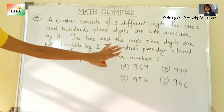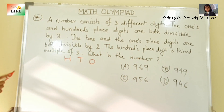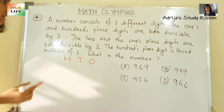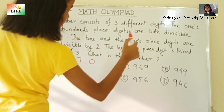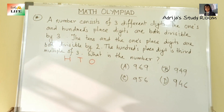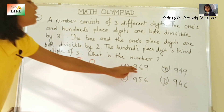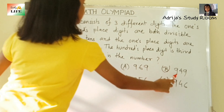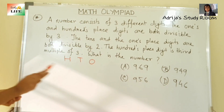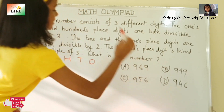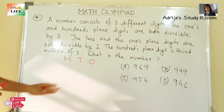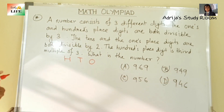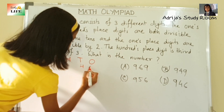So in these numbers, the ones and hundreds places are all divisible by 3. Now the next condition: the tens and ones place digits are both divisible by 2. Here, 6 is divisible by 2 but 9 is not, so that number is not possible. Then 4 is divisible by 2 but 9 is not, so that is also not possible. In the third number, 4 and 6 are both divisible by 2.